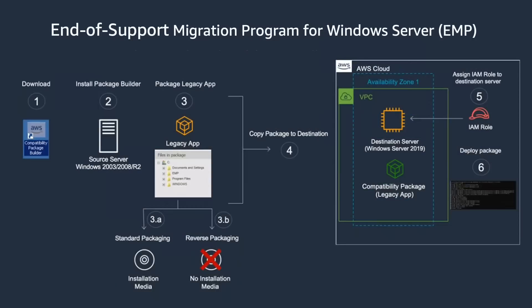The next service is EMP — the End of Support Migration Program for Windows Server. Windows Server 2003 has been end-of-support since July 2015 and Server 2008 since January 2020. Many customers still struggle to upgrade applications running on these end-of-life operating systems because legacy applications are often not supported on newer OS versions, requiring refactoring — which is expensive, and the expertise to rewrite them is often no longer available in their environment.